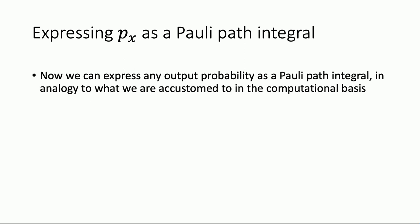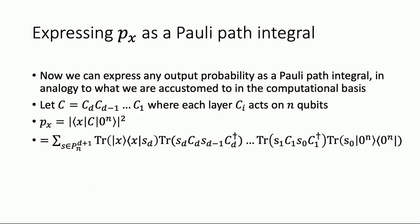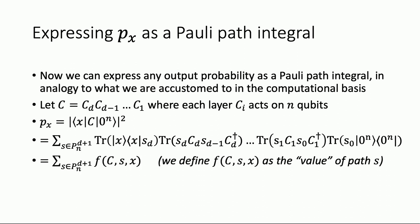We can express any output probability as a Pauli path integral. We can write out P0 — the output probability of seeing all zeros — as a sum over all Pauli paths S. Each Pauli path is a D+1 tuple of N-qubit Pauli operators, so there's a huge number of them, just like in the computational basis. But the values of each path are relatively manageable — it's just a product of these traces. There are two sorts: the bookends — the first and last terms, which are just Pauli coefficients of the input and output states — and then the transition amplitudes in between. We define the value of each path as this function f of the circuit, the input x, and the particular path S.